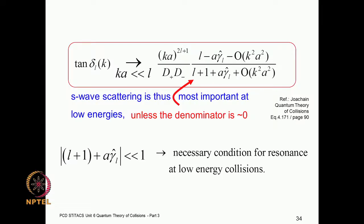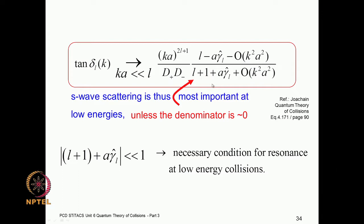We already obtained in our previous class the expression for the tangent of the phase shift, and we found that the resonance condition is given by the denominator going to zero. This l plus 1 plus a times gamma-hat, where gamma-hat is the limiting value of the logarithmic derivative as k tends to zero.